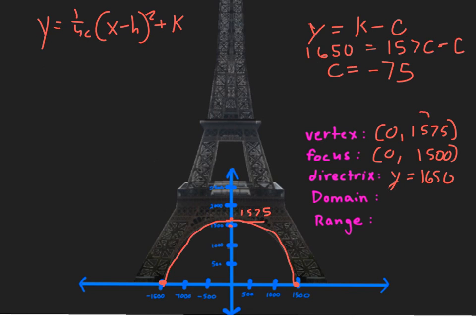Also the domain and range, the domain's going to be negative infinity to positive infinity. And the range is going to be negative infinity to 1575. And with all that, our equation comes out to be y equals negative 1 over 300 x squared plus 1575.